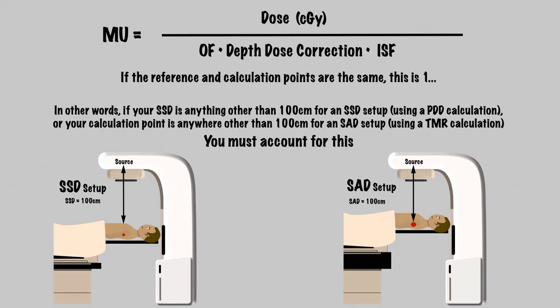Both the reference location and the calculation point location would be clearly communicated in an exam format, but most exam calculations and the majority of clinical calculations will be set up so that either SSD is 100 or the calculation point will be at SAD. If the calculation point was at a different distance from the source than the reference conditions, you would need an inverse square correction to adjust the output accordingly. However, this is outside the scope of this video.